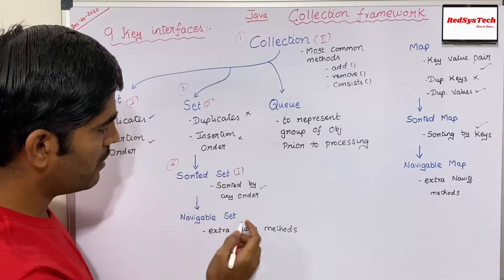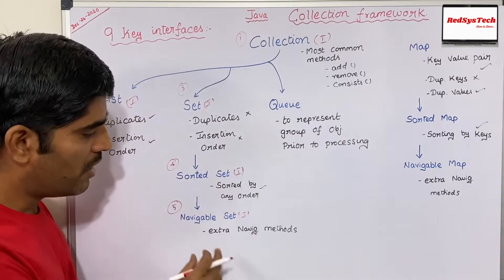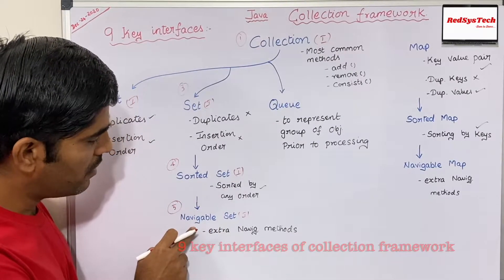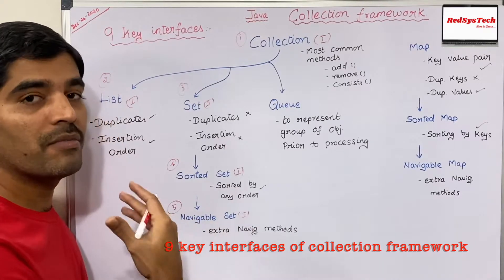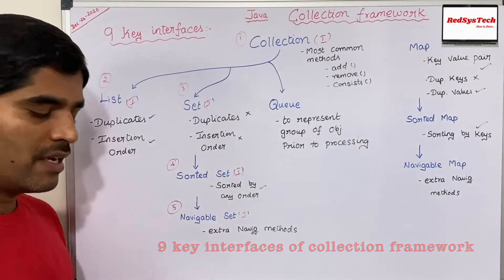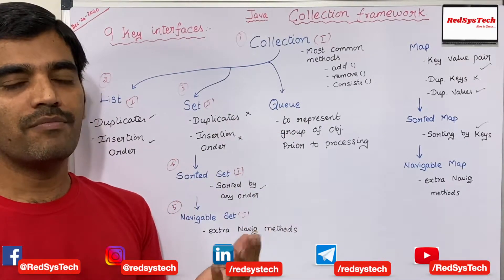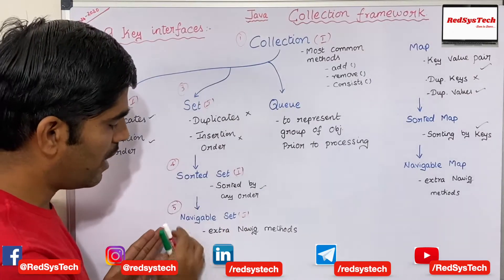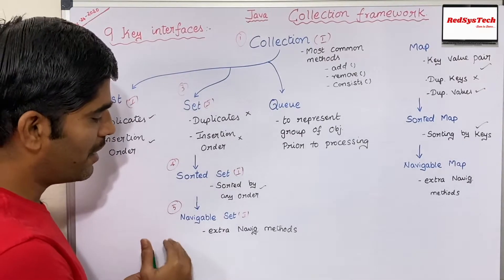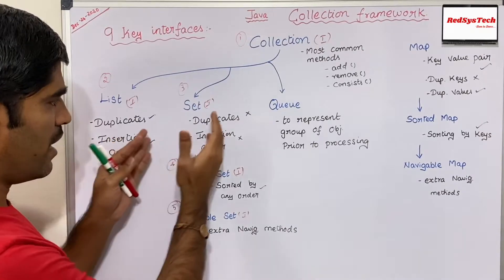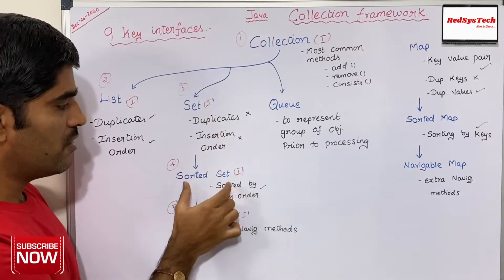The fifth interface is NavigableSet, which is a child interface of SortedSet, meaning it inherits all the properties from Set and SortedSet. In addition, it has some extra navigable methods. For example, if you have 1000 objects in a set and you want to navigate between object to object, the NavigableSet interface provides methods specifically for navigating between objects. That is why it is called NavigableSet.